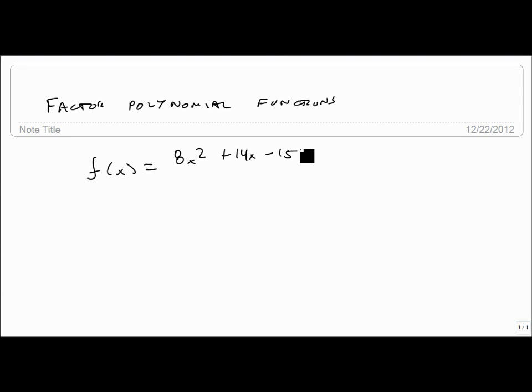We ignore the f(x) for a minute and start by looking for GCF. One is the only greatest common factor and doesn't help us, so then we count the terms and see 3.